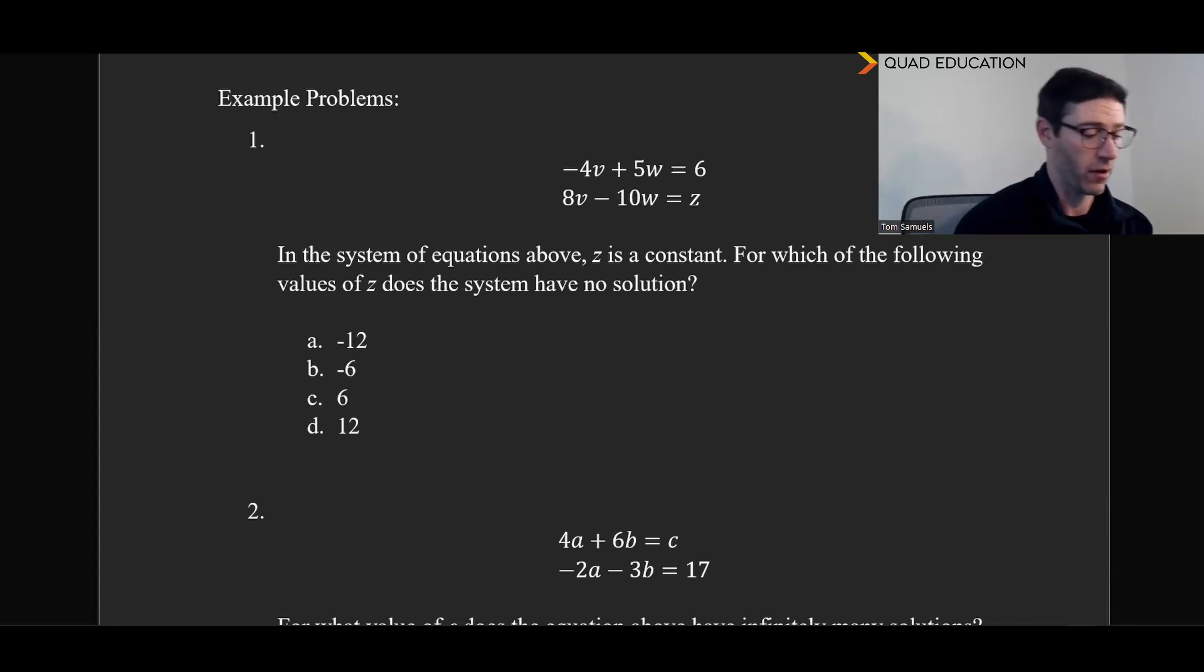Let's see what we've got. So we have a system of equations here. And we say in the system of equations above, z is a constant. And whenever you see constant in this test, it just means that z is a number, and not an input or an output. For which of the following values of z does the system have no solution? And what that means is we need to make these parallel. What I've done here to make this slightly more difficult is reverse the sign. And we say we have 8v there, negative 4v there.